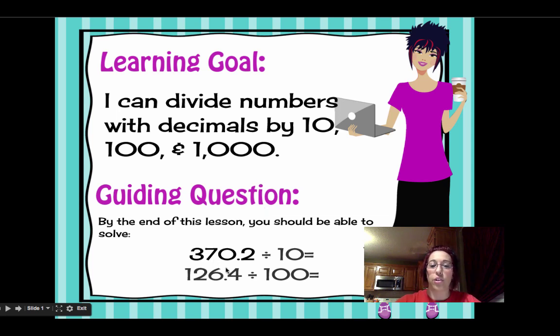Our guiding questions here. We had 370.2 divided by 10. Ten has one zero. So our decimal should move back one place. And we get 37.02. We have 126.4 divided by 100. One, two. Our decimal goes back one, two. So we get 1.264. Have a nice night. I hope you understand these concepts. If not, bring me questions to class and I will certainly help you understand.